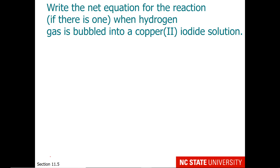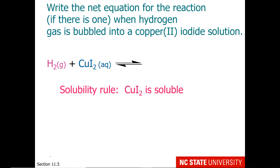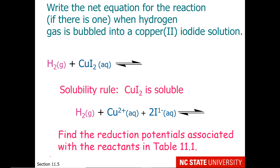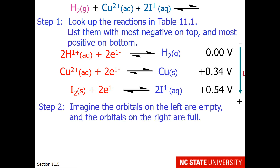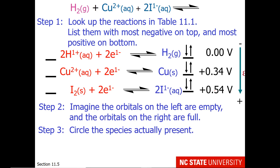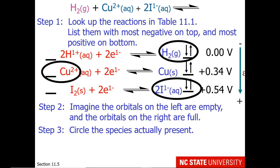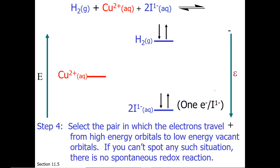Why don't we bubble the hydrogen gas into a copper-2-iodide solution? According to the solubility rules, copper-2-iodide is soluble — it's copper-1 that is not soluble. But we have three species floating around in solution. Once again we need to find them on a reduction potential table. I've listed them with more negative on top, which is our standard hydrogen electrode, and most positive on the bottom. Step 2 is imagination: empty on the left, electrons on the right. Step 3: circle what you actually have — hydrogen, copper-2+, and iodide.